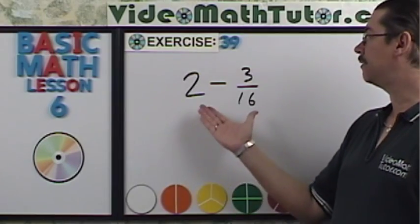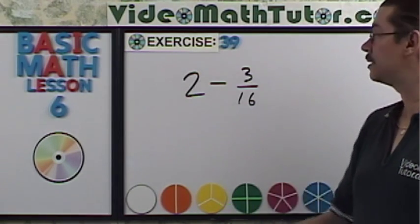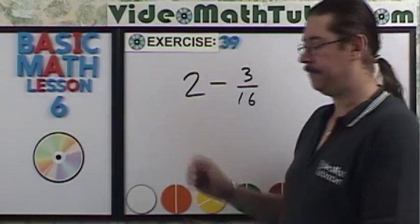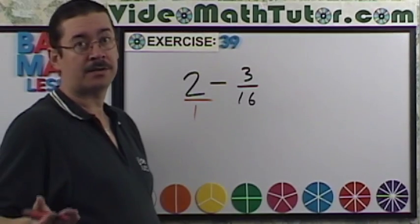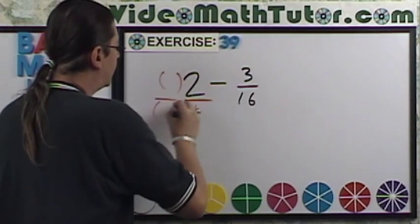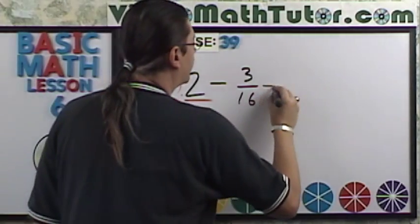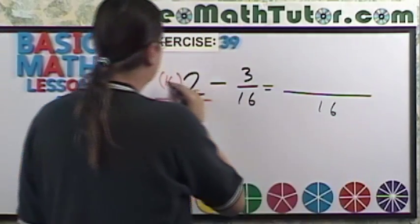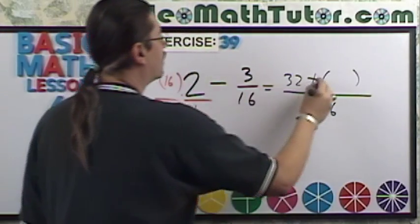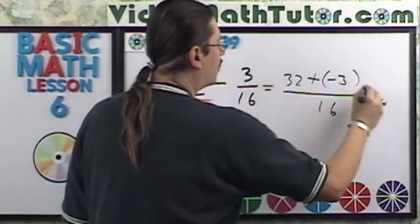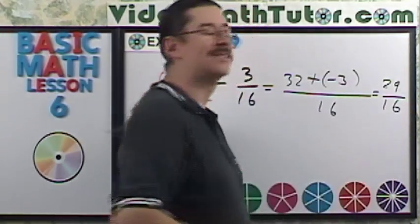Now I'd like you to subtract these two numbers right here. Well, the first step is we need to put the whole number over 1. Between 1 and 16, my common denominator is going to be 16, so multiply this one top and bottom by 16. So the common denominator is 16. It's going to be 16 times 2 is 32 plus a negative. I'm going to add the opposite, and that's just going to be negative 3. We put those together, we're going to get 29/16.